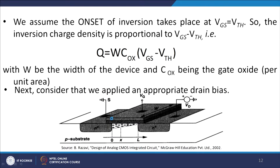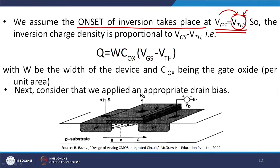The gate voltage at which the channel is just formed is defined as the threshold voltage. The onset of inversion takes place at that value of gate voltage when it equals the threshold voltage of the device. For example, for an NMOS enhancement mode MOSFET, the threshold voltage Vth is approximately 0.5 volts, which means that only after 0.5 volts will a channel be formed between source and drain.